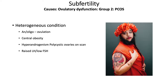Polycystic ovarian syndrome is a heterogeneous condition — there isn't one specific diagnostic feature, more a combination. These include anovulation or oligo-ovulation, presenting as oligomenorrhea, central obesity, hyperandrogenism showing as hirsutism or acne, often raised LH and low FSH because excess oestrogen in PCOS inhibits FSH, and polycystic ovaries on scan — a very common finding.